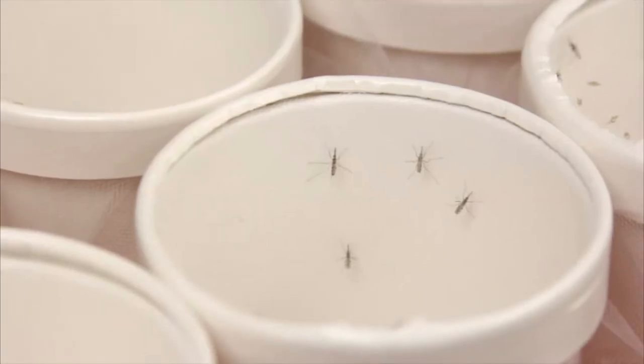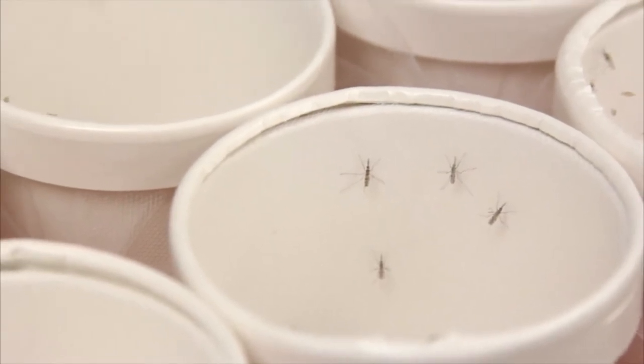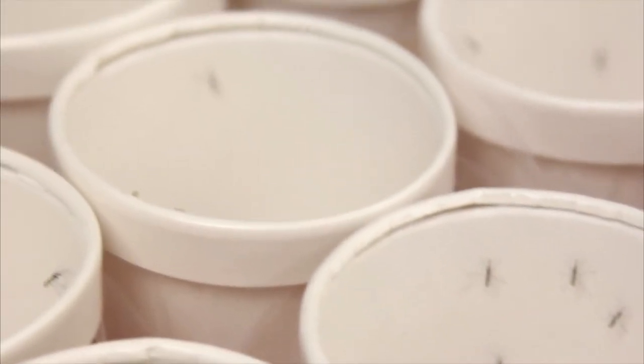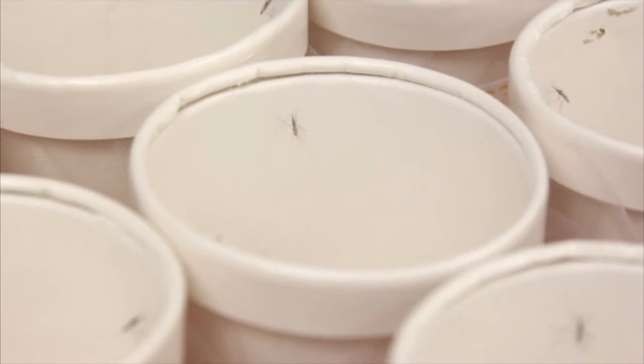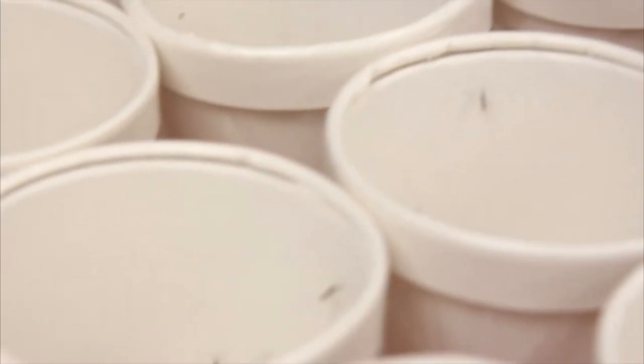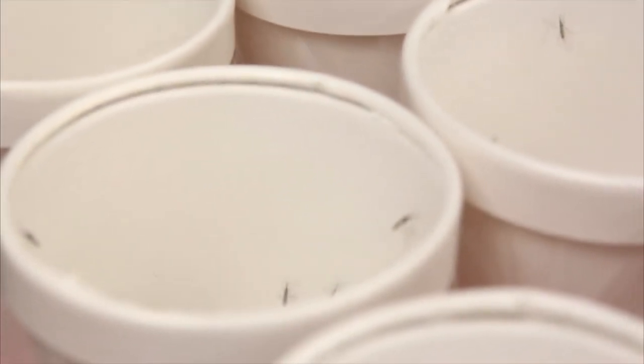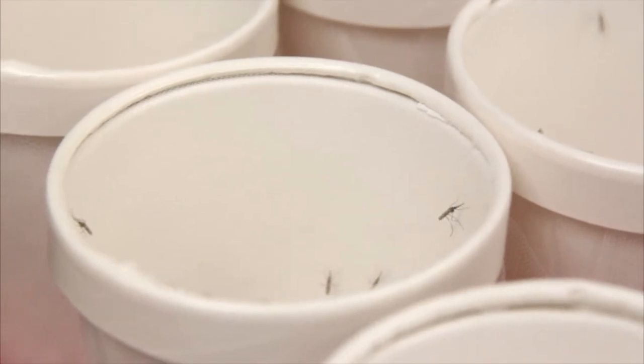Some transgenic colonies can only be maintained by continually outcrossing them with wild type mosquitoes. For outcrossing, use virgin females that are around five days old. Before adding the females to the colony cage, check the cups to make sure that all the mosquitoes are females and remove any cups contaminated with males.